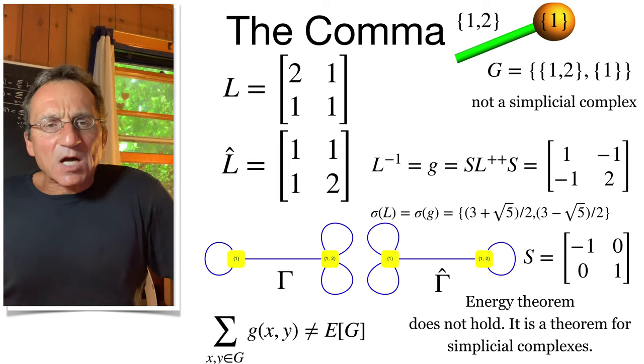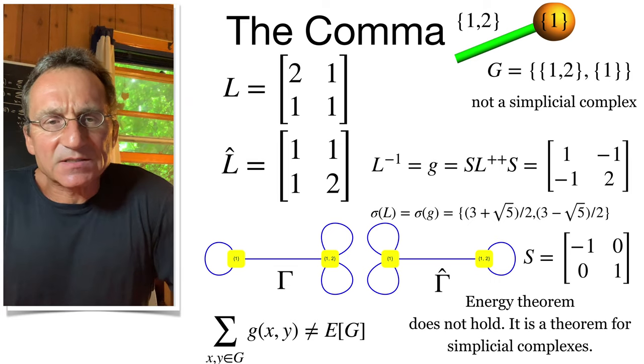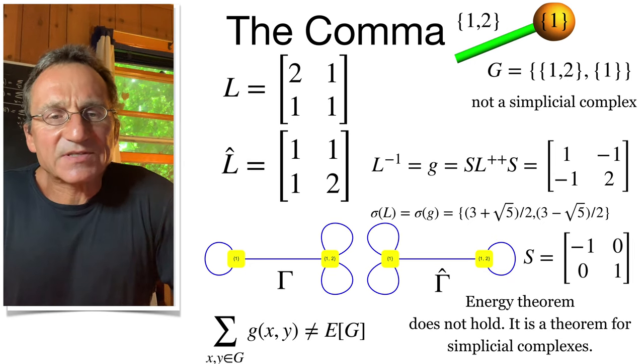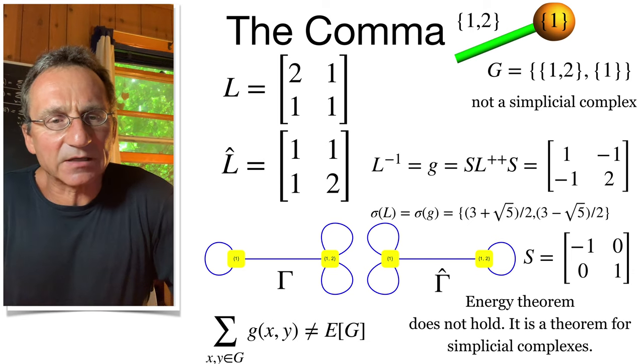Here is an example of a set of sets which is not a simplicial complex. The smallest example is the comma complex, which has two sets only. So it leads to two times two matrices, the Arnold-Katt matrix.